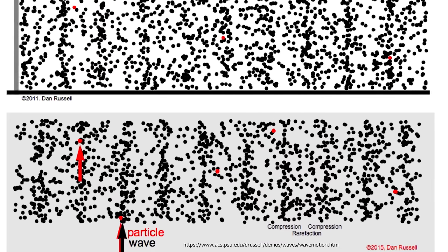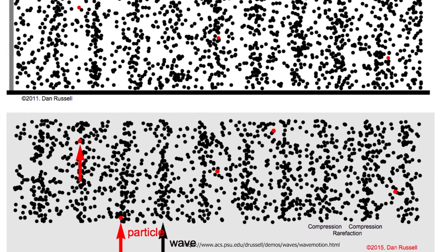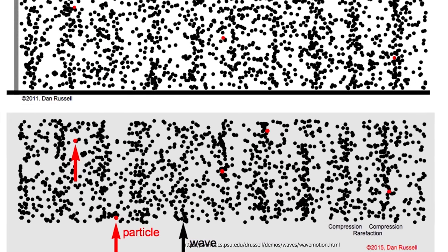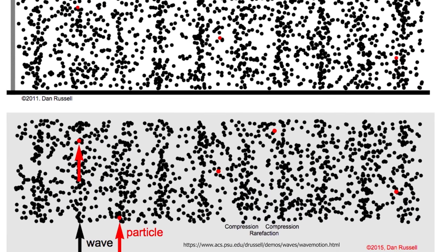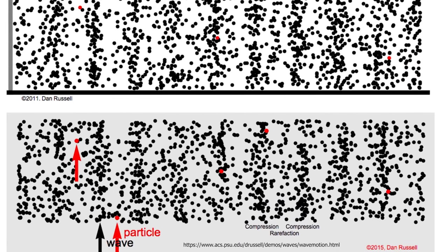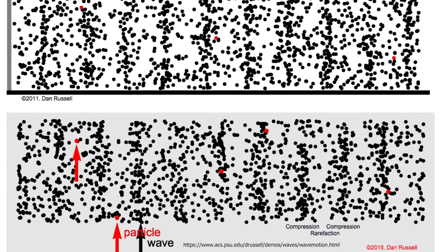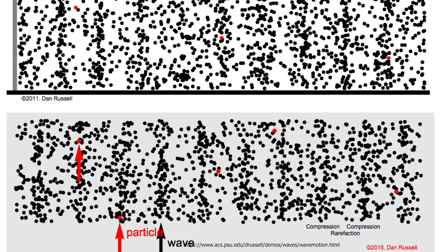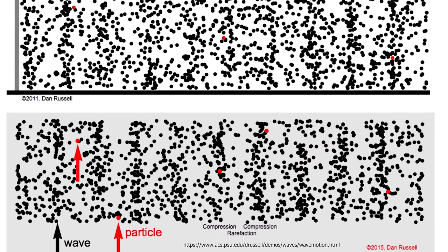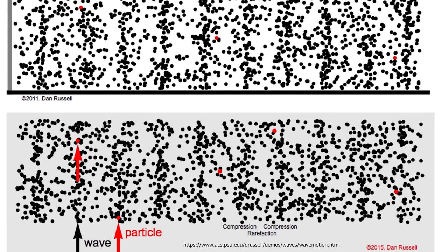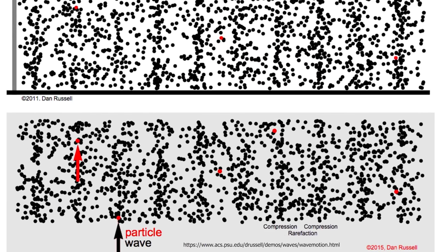Sound is created with the speaker cone vibrating back and forth, basically pushing air one way and then pulling it back the other way — just back and forth. What it does is create a location of high pressure and then low pressure. But if you look at only one individual air particle, you'll notice that it's not going anywhere; it's staying in the same location.